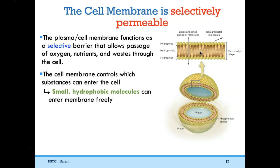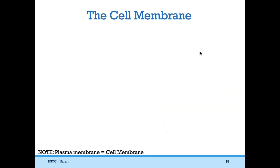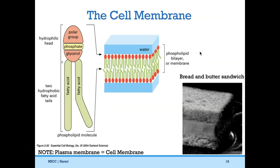Small hydrophobic molecules can enter freely. Hydrophilic molecules, which are polar, need help from membrane proteins to enter the cell. Let's remind ourselves how this phospholipid bilayer is oriented: the fatty acid tails make a hydrophobic core, so polar things cannot just cross through it. It's a bit like a bread and butter sandwich.